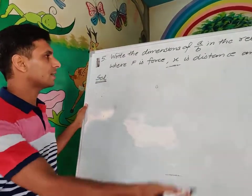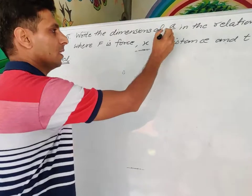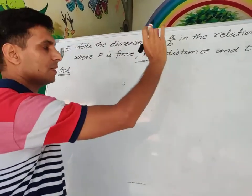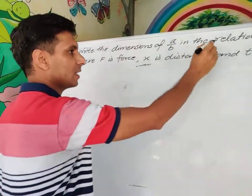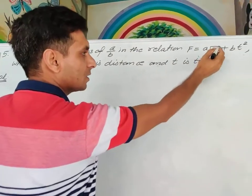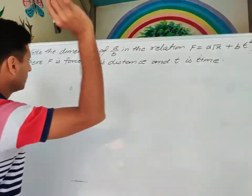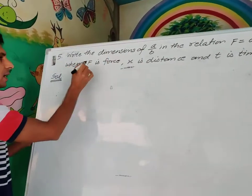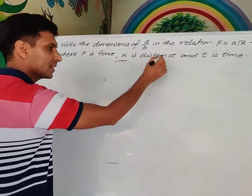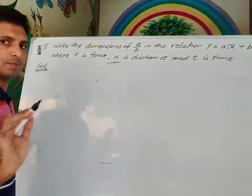Next question — question 5: Write the dimensions of a/b in the relation F = a√x + bt², where F is force, x is distance, and t is time.